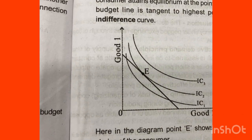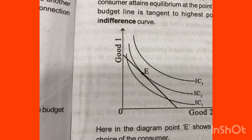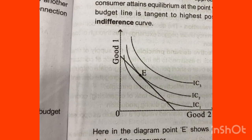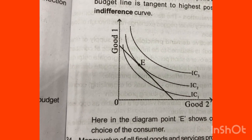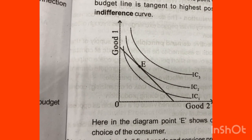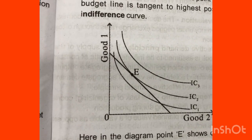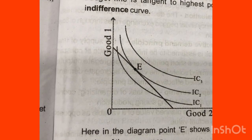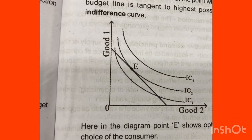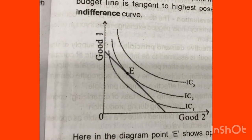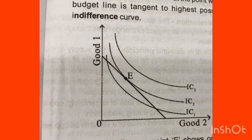We go to the budget line. The budget line shows good one and good two. In the budget line, whichever indifference curve is touching it — that is the point where the consumer will be most satisfied.